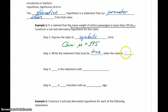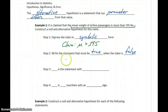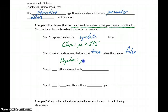We also want to write the statement that's true whenever that claim is false — essentially the negation or opposite of that statement. So if our population mean is not greater than 195, it has to be something less than or equal to 195. The opposite of greater than is anything less than or equal to that.